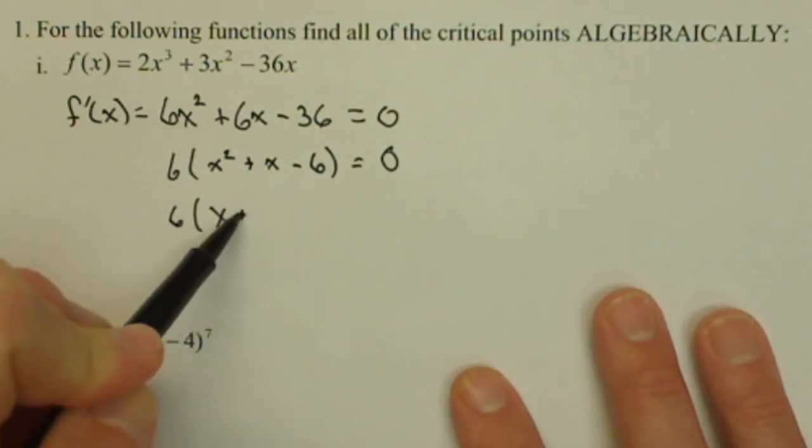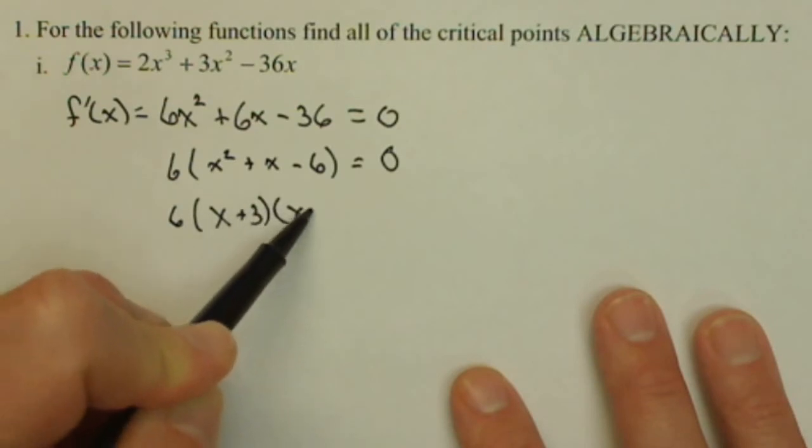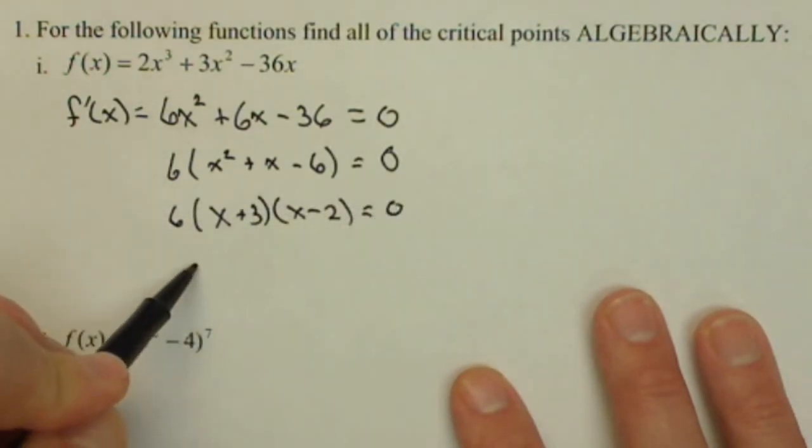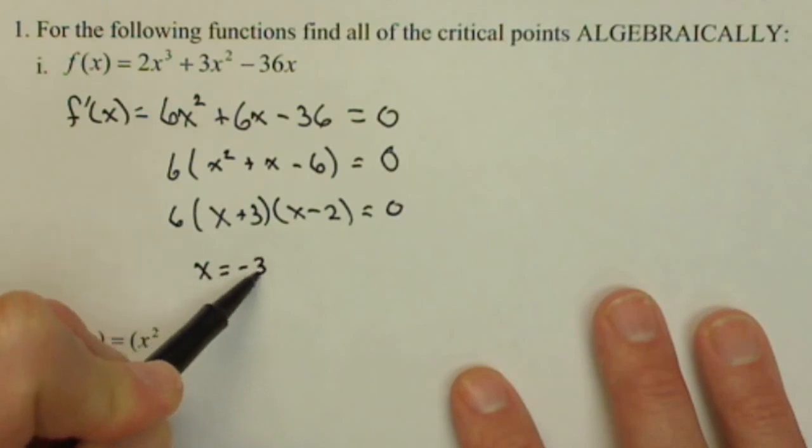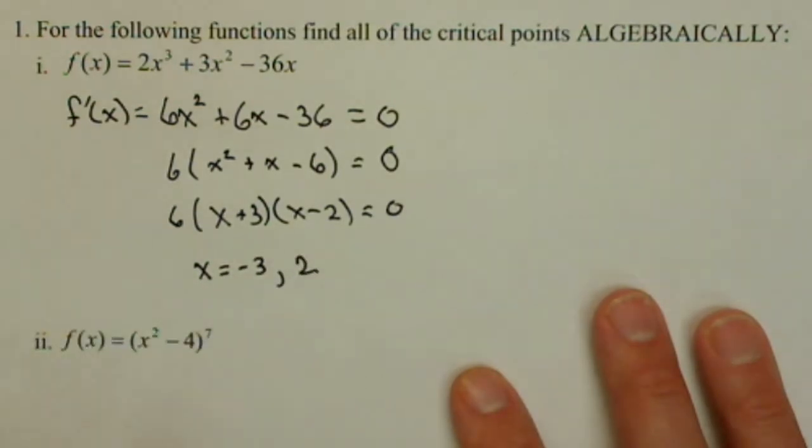This is going to factor into (x + 3)(x - 2) = 0. That means I have critical points of negative 3 and positive 2.